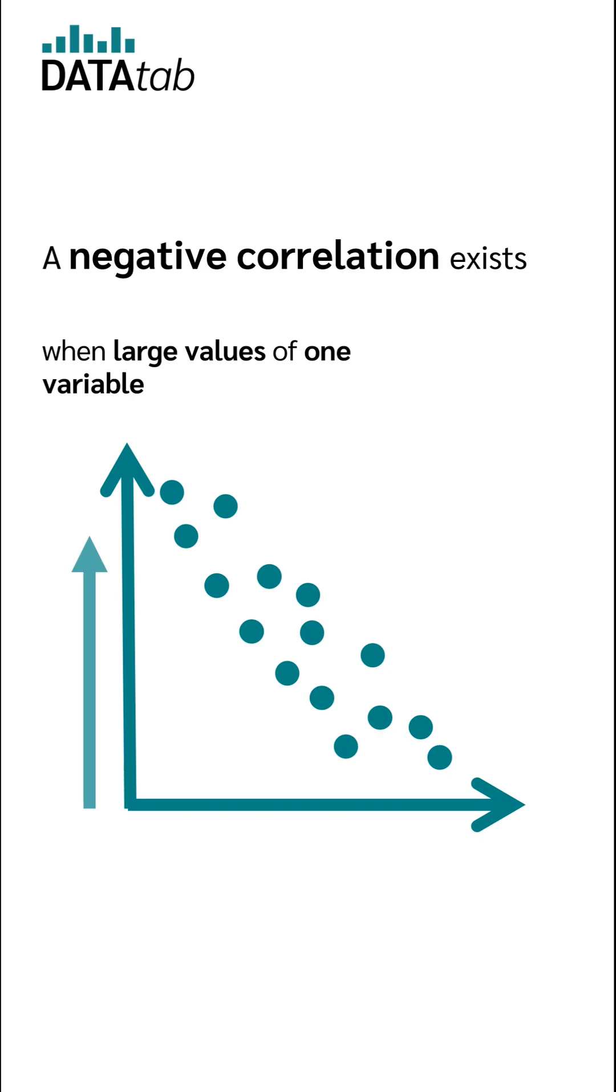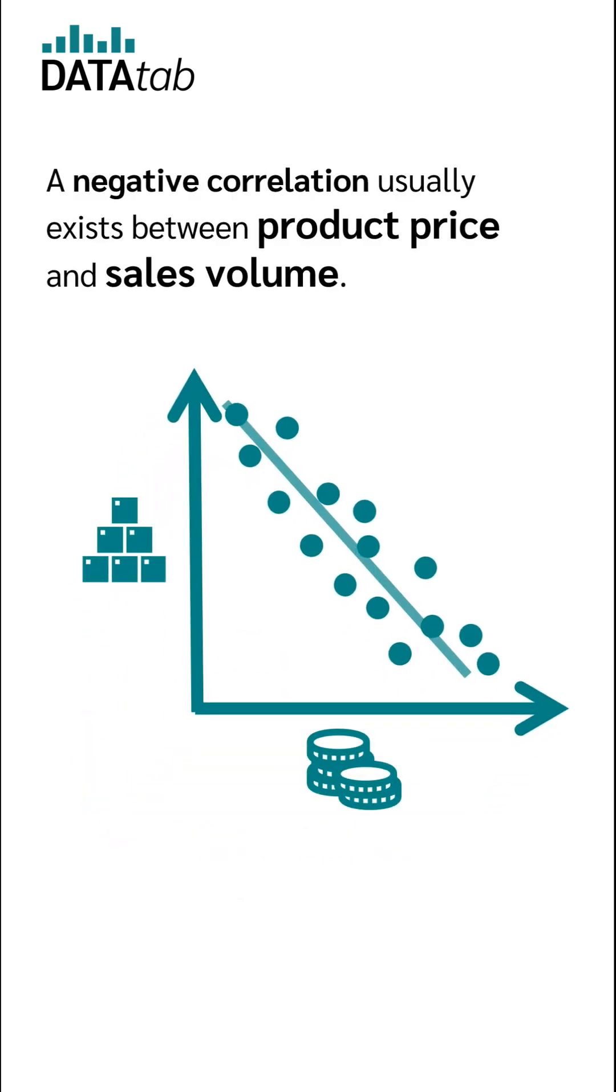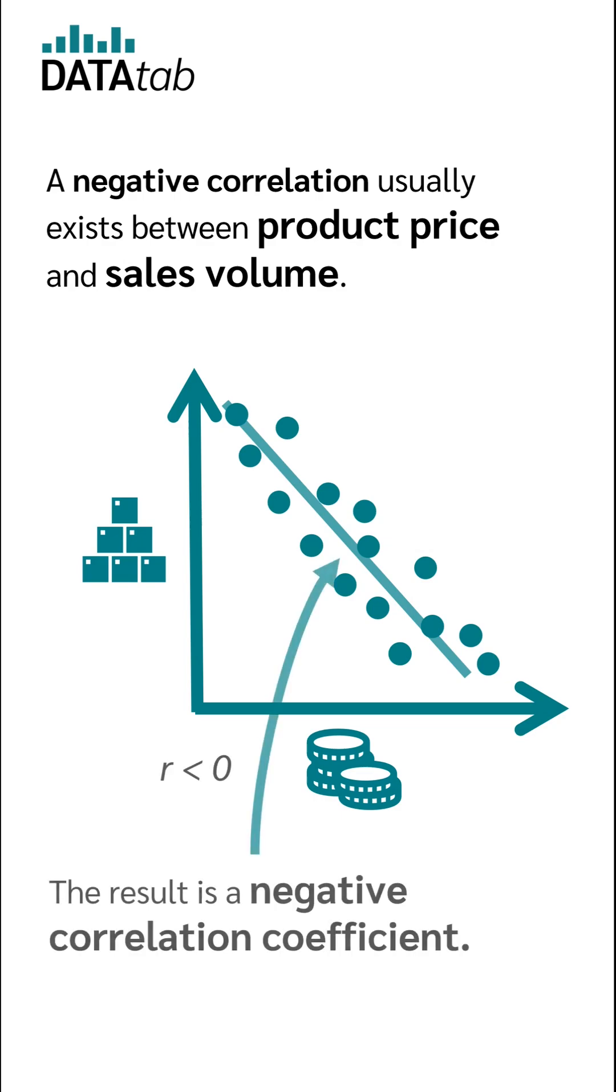A negative correlation exists when large values of one variable go along with small values of the other variable and vice versa. A negative correlation usually exists between product price and sales volume. The result is a negative correlation coefficient.